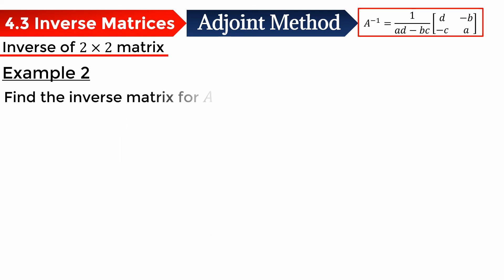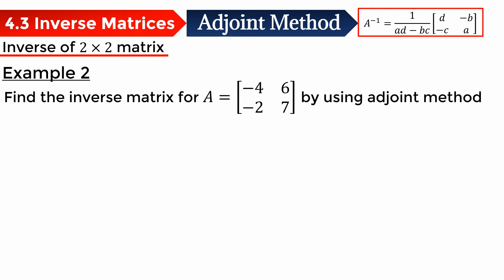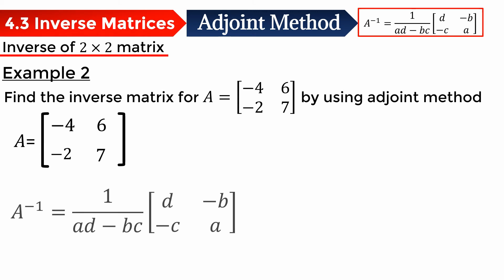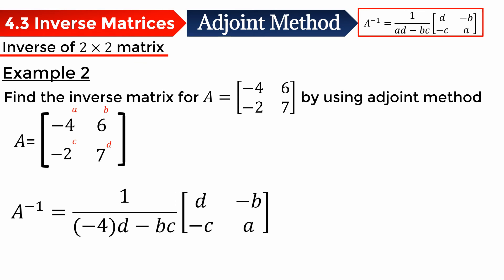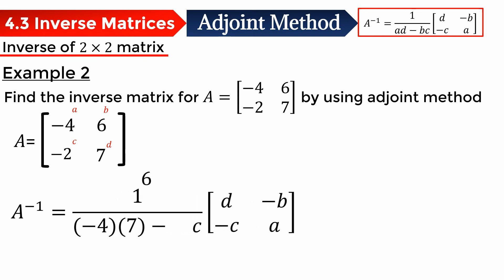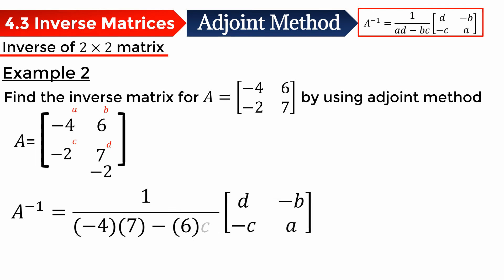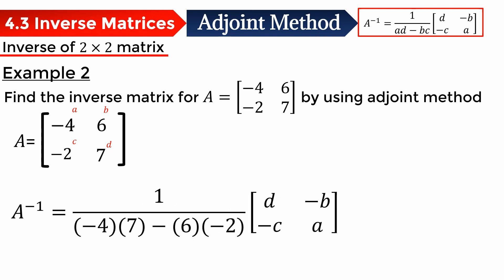The second example: find the inverse matrix for matrix A with the elements negative 4, 6, negative 2, 7 by using the adjoint method. For this question it's the same approach. We start from matrix A and plug the elements into the formula. So A is negative 4, D is 7, B is 6, and C is negative 2.